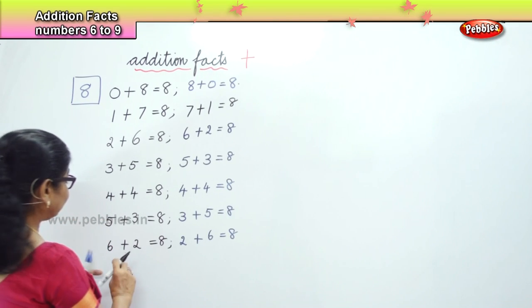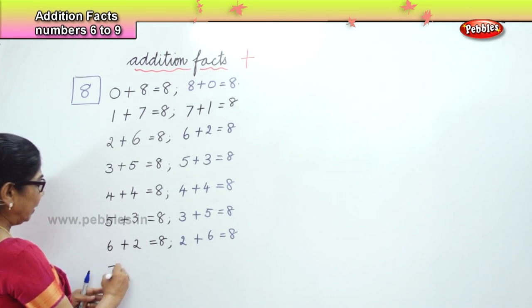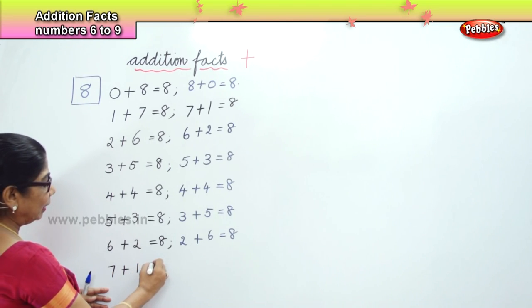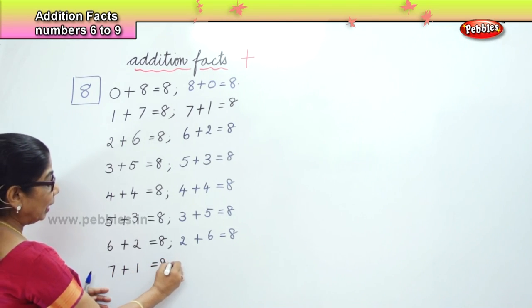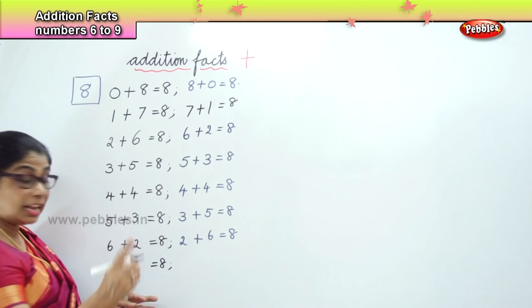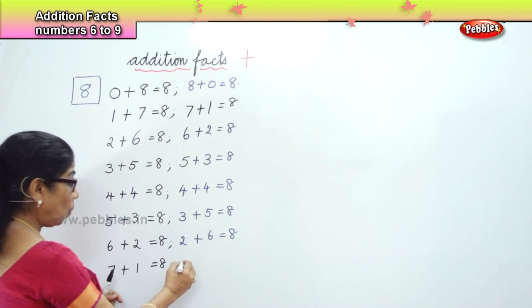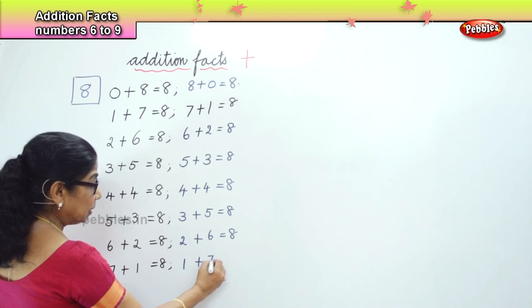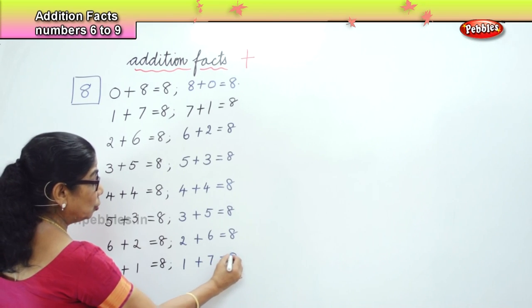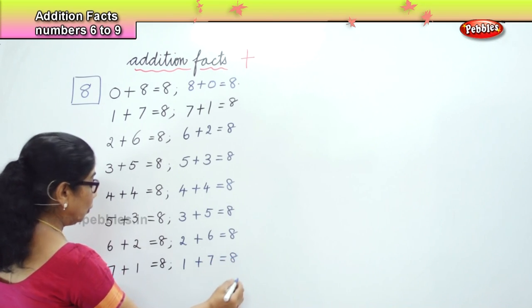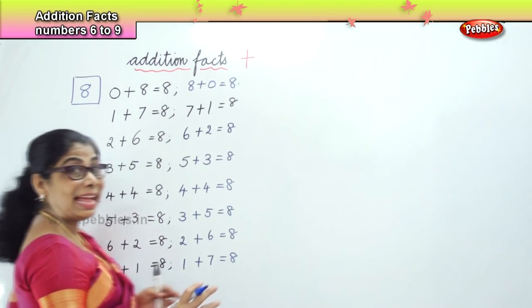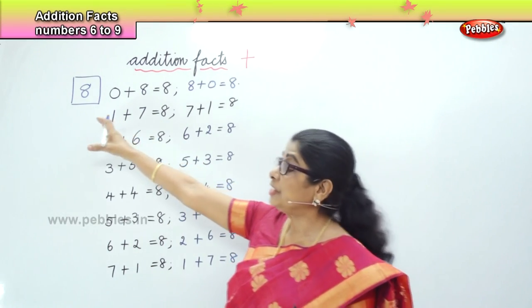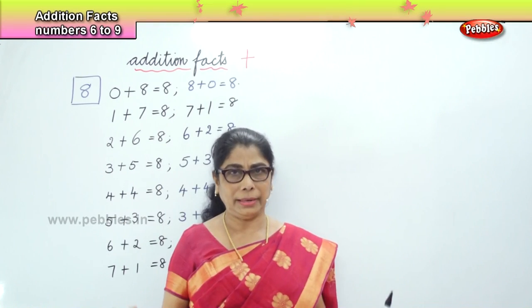7 plus 1 is equal to 8. And the reverse: 1 plus 7 is also equal to 8. So this is the number combination, or the addition fact, of number 8.